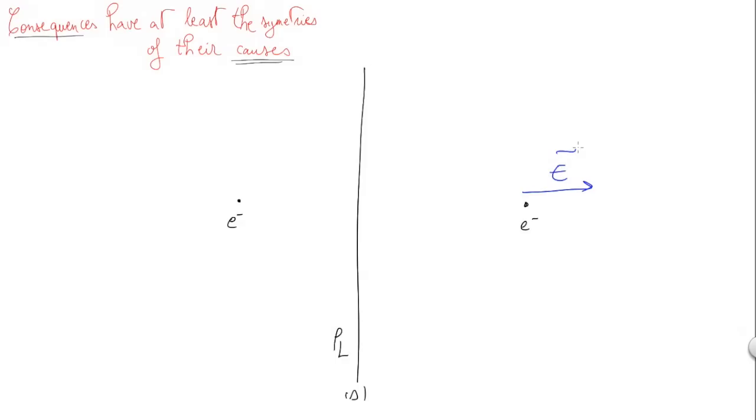they would see symmetric electric fields with the same intensity from each side of the line. While if the line holds a current I, if this electron sees a magnetic field going inside the screen, the other electron would see an anti-symmetric magnetic field coming out of the screen.